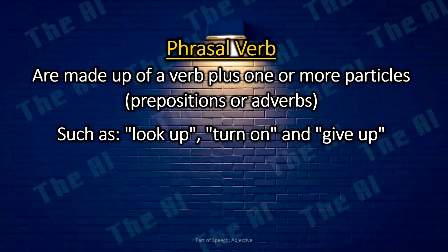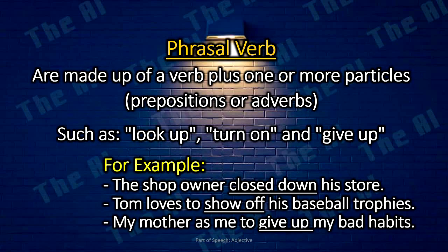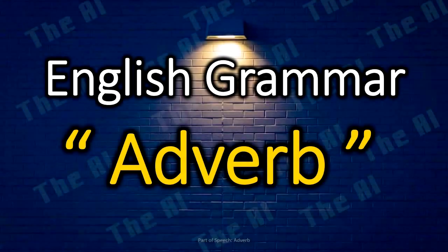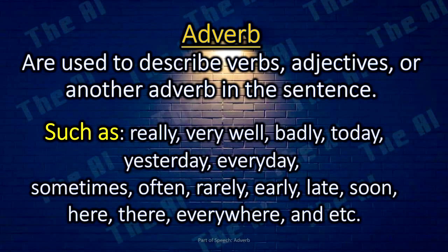Phrasal verbs are made up of a verb plus one or more particles, such as prepositions or adverbs, like look up, turn on, and give up. For example: The shop owner closed down his store. Tom loves to show off his baseball trophies. Adverbs are used to describe verbs, adjectives, or other adverbs in a sentence, such as really, very well, badly, yesterday, often, everywhere, etc.